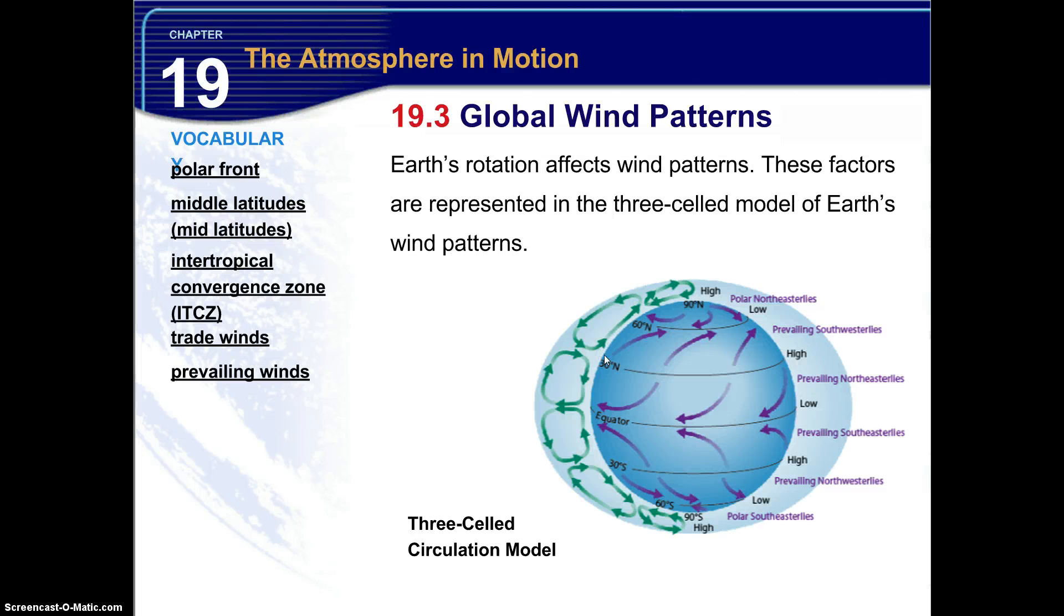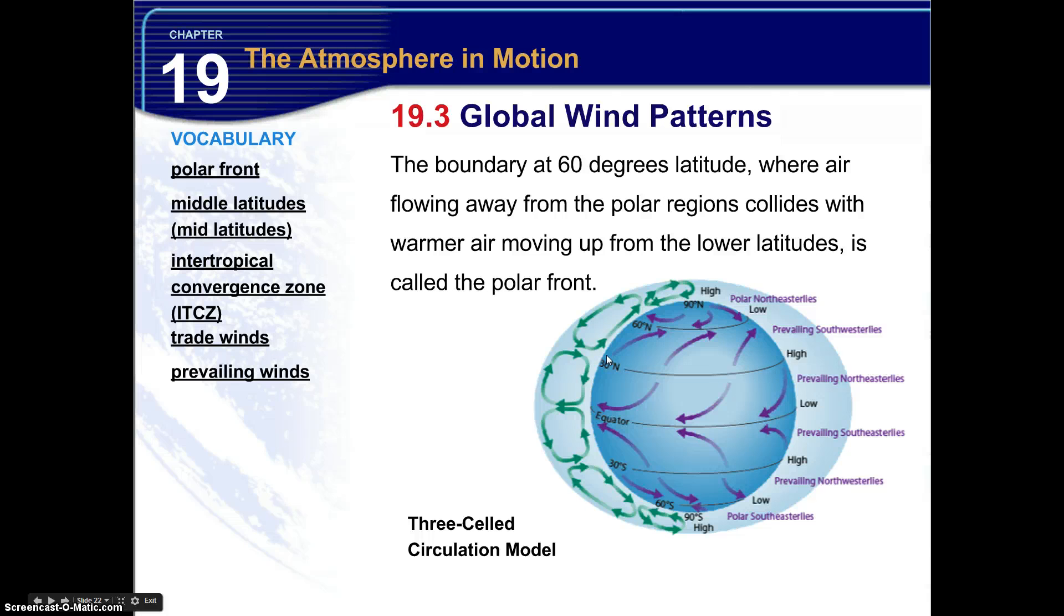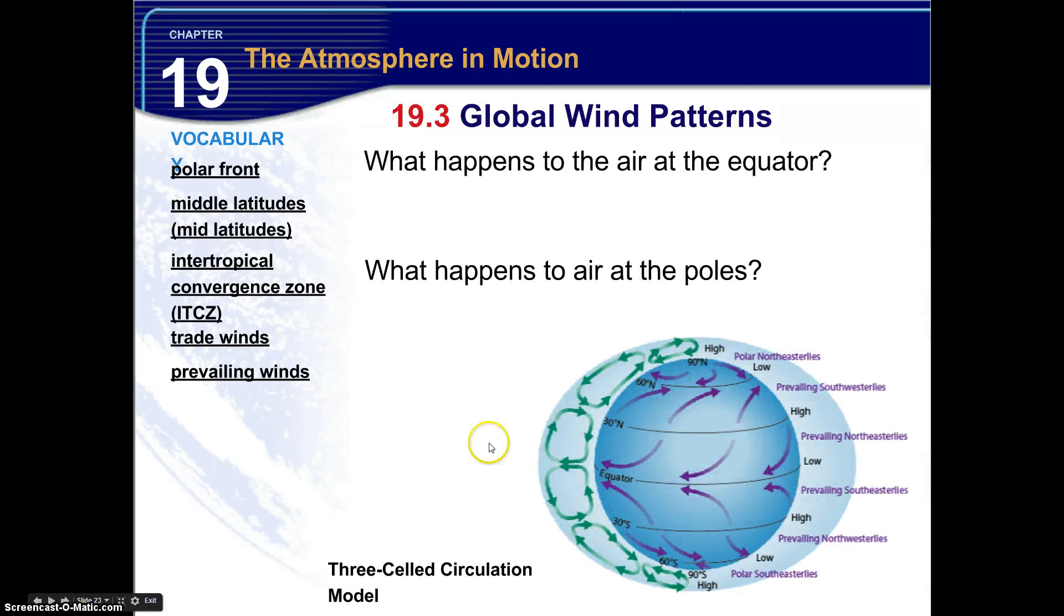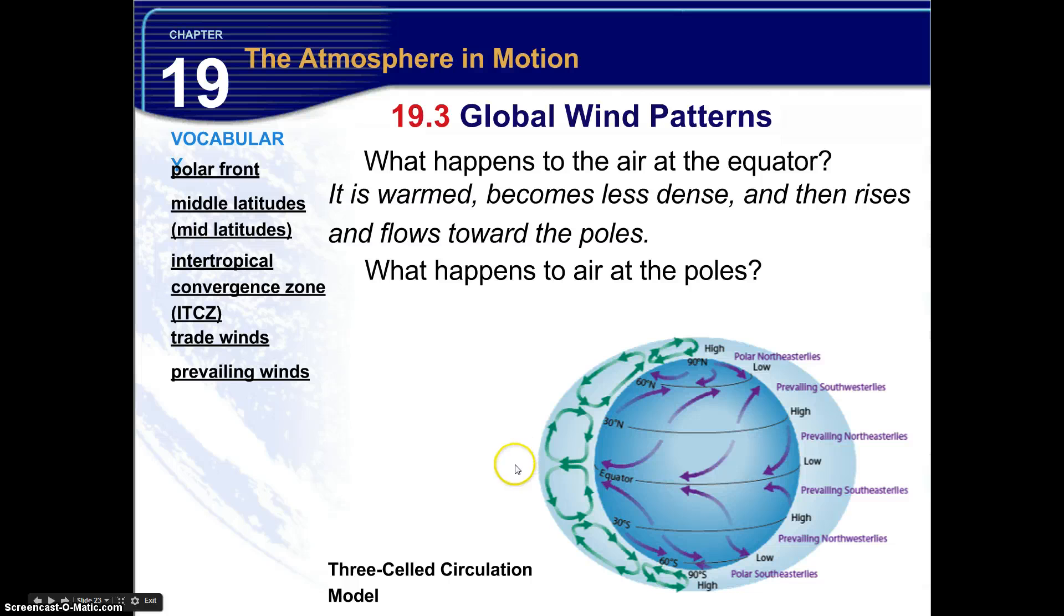Now Earth's rotation affects wind patterns. These factors are represented in the three-celled model of Earth's wind patterns. The boundary at 60 degrees latitude, both north and south, where air flowing away from the polar regions collides with warmer air moving up from the lower latitudes is called the polar front. So there's a polar front right here in the north. There's also a polar front down here in the south. So what happens to the air at the equator? Remember what happens in the properties of warm air. So it is warmed, becomes less dense, and then rises and flows towards the poles.